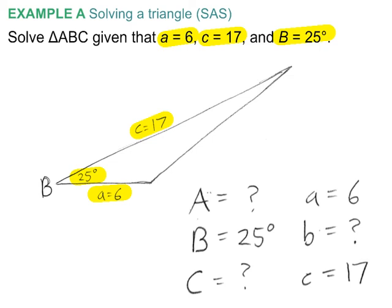So our goal here is to find big A, little b, and big C. Notice that this is an SAS triangle. It's an SAS triangle. Side, angle, side.